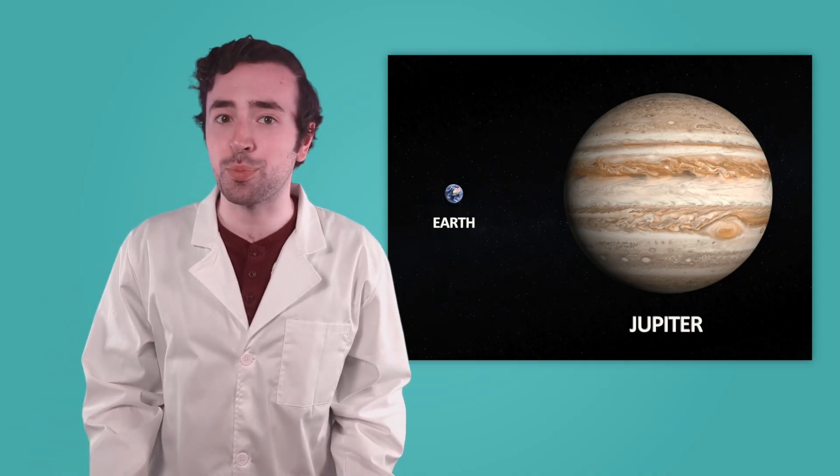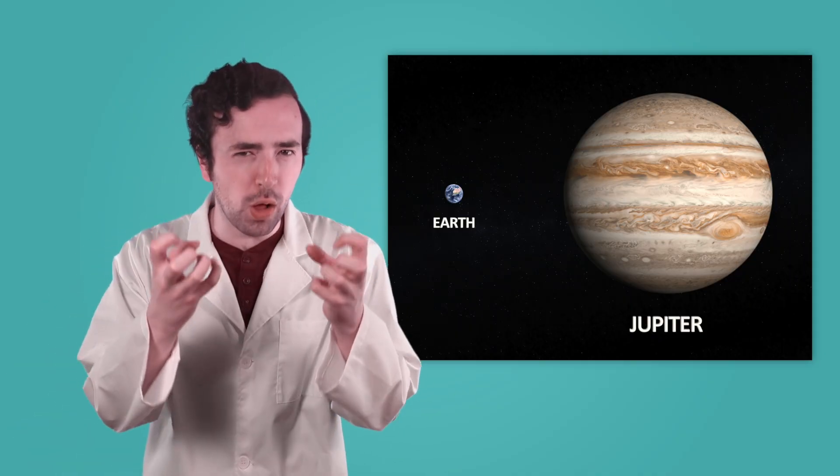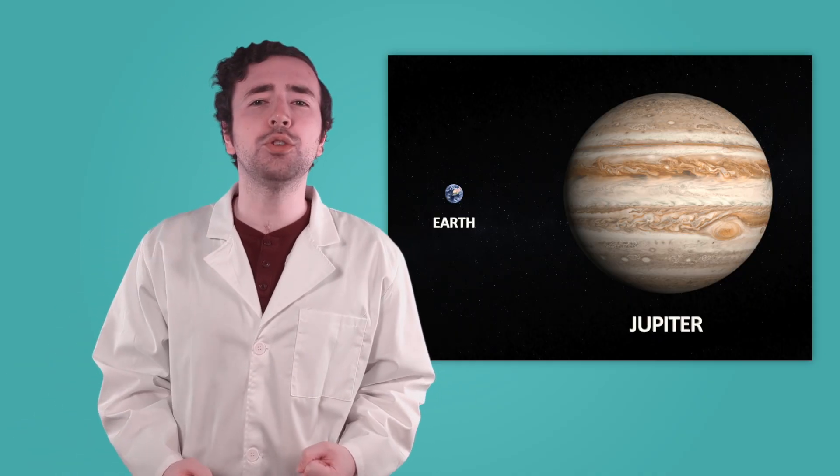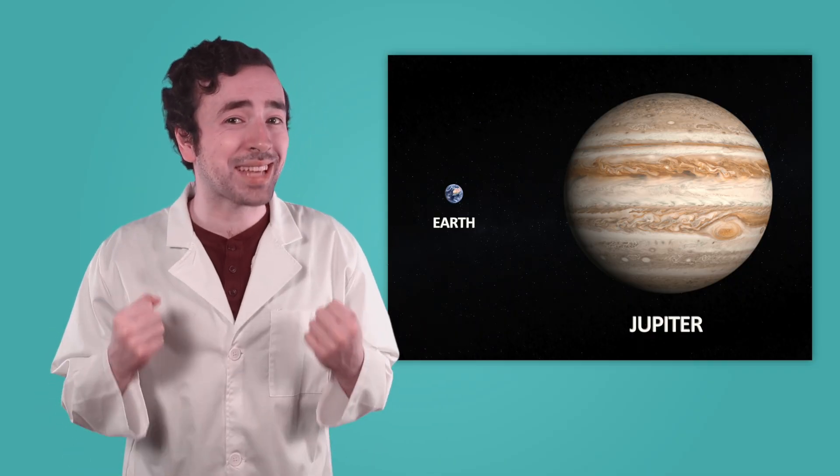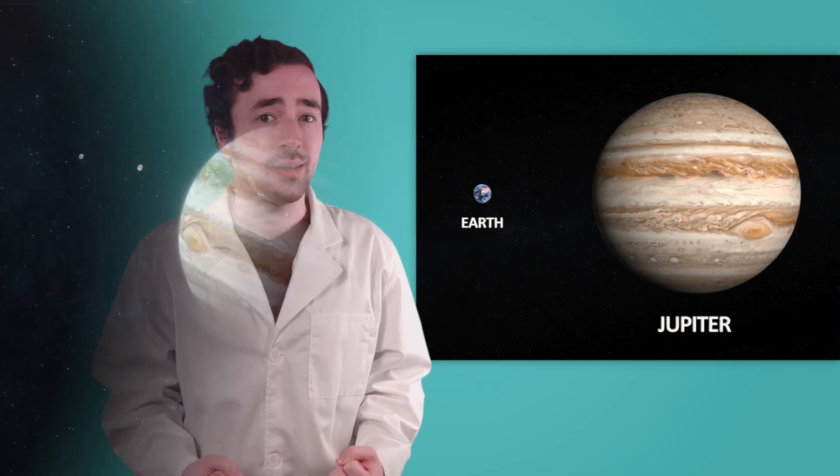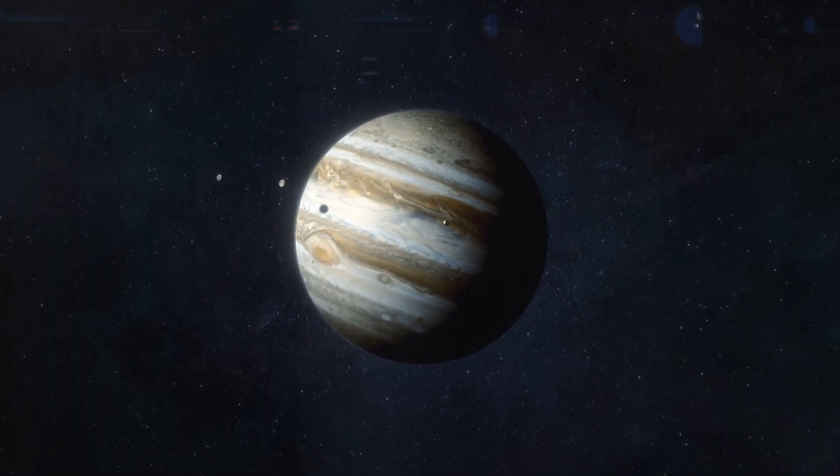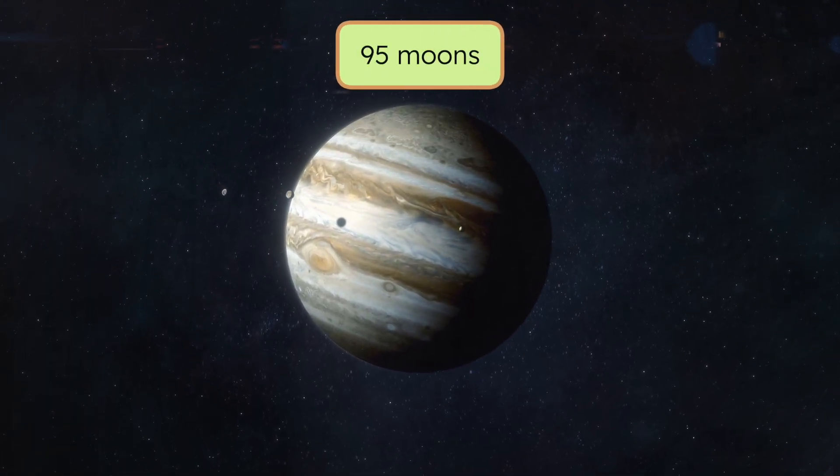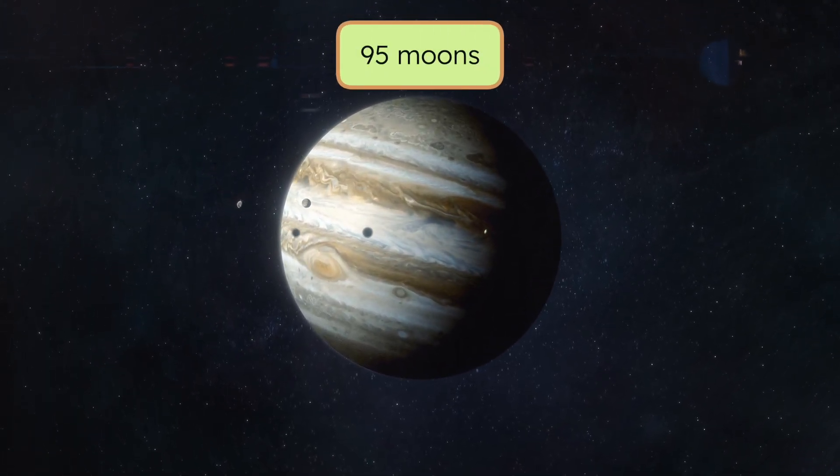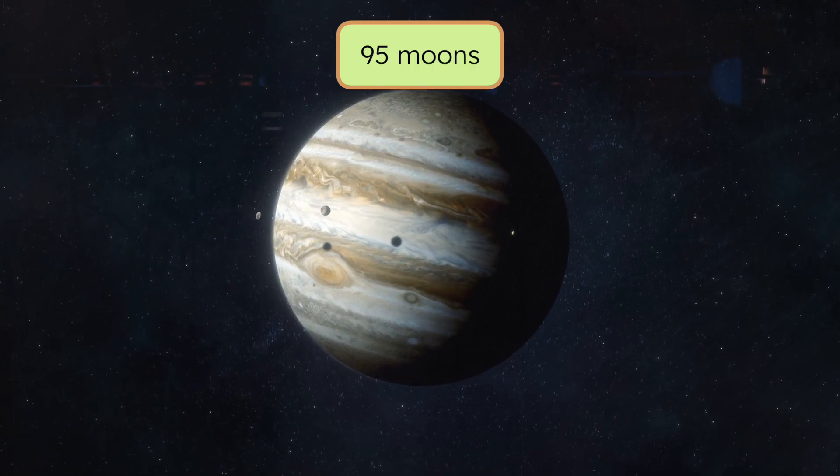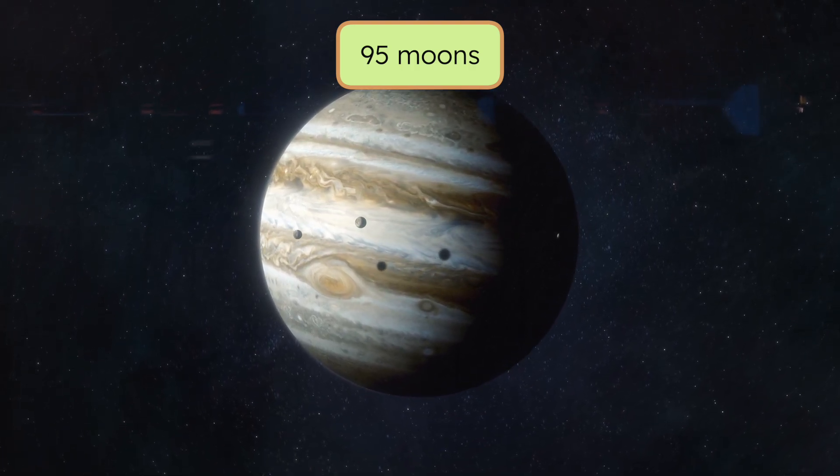If you could somehow visit Jupiter, its gravity would pull on you so strongly that you'd feel more than twice as heavy as you do on Earth. Jupiter's strong gravity also means it has a lot of moons. In fact, it has 95 moons orbiting around it. Some are tiny, but others are even bigger than the planet Mercury.